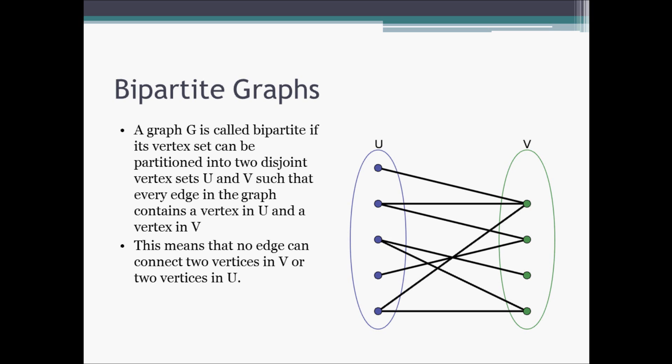Just to clarify this a little further, this means that no edge can have both an initial and terminal vertex in U, or an initial and terminal vertex in V.